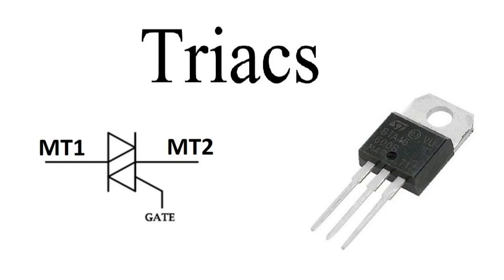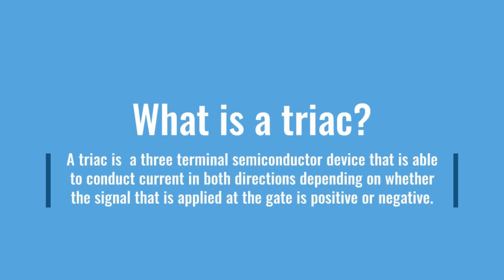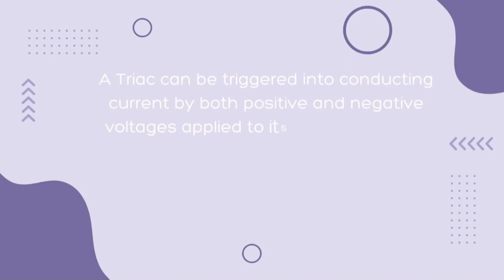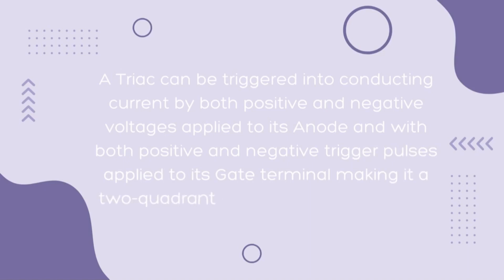In our tutorial today, we shall discuss briefly about one type of thyristor known as a TRIAC. A TRIAC is simply a three-terminal semiconductor device that is able to conduct current in both directions depending on whether the signal applied at the gate is positive or negative. In other words, a TRIAC can be triggered into conducting by both positive and negative voltages applied to its anode, and with both positive and negative trigger pulses applied to its gate terminal, making it a two-quadrant switching gate control device.